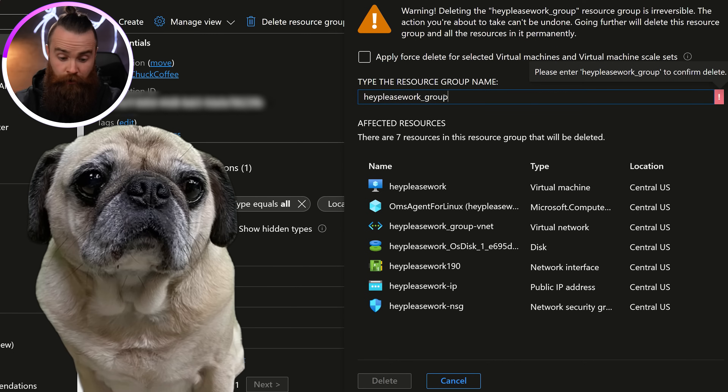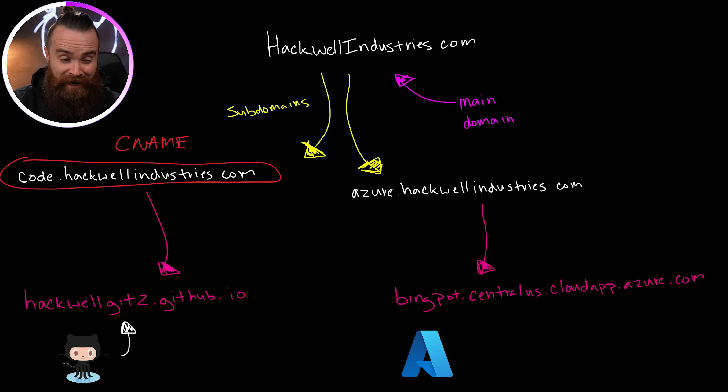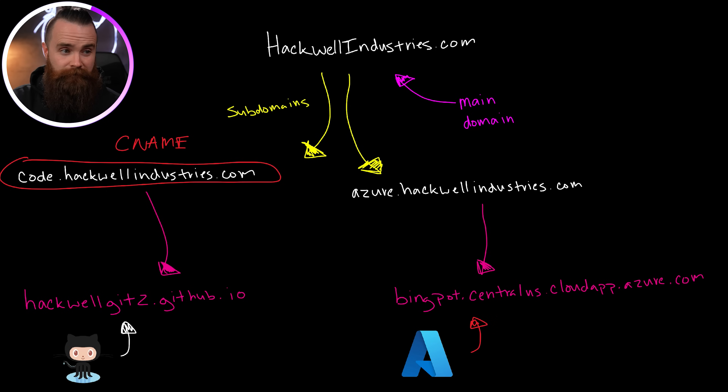It's untraceable. There's no way to detect this. All I did was sign up for a GitHub account, but now I've got them. And you can do the same thing with Azure. Bernard deletes that resource, but I can come in and create a new resource and use this newly available name as my resource DNS. And now I own azure.hackwellindustries.com.